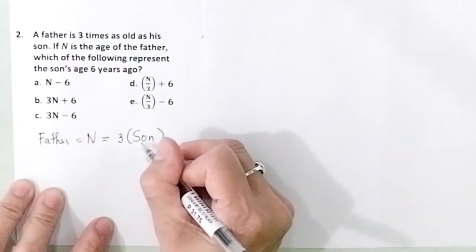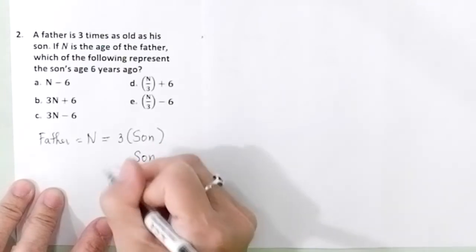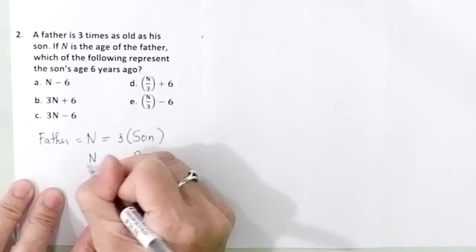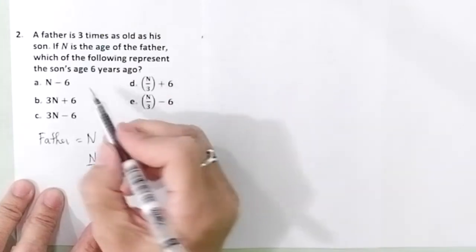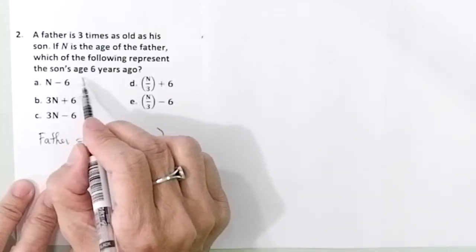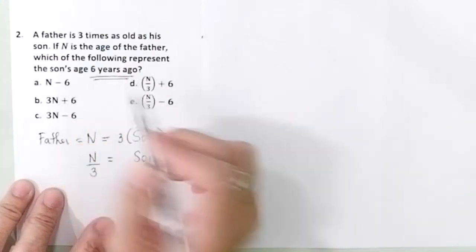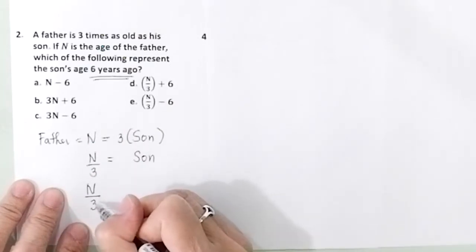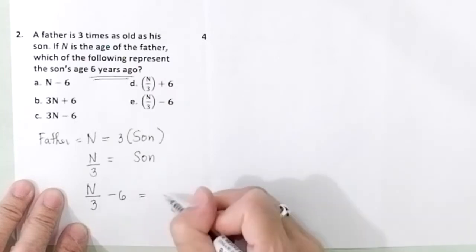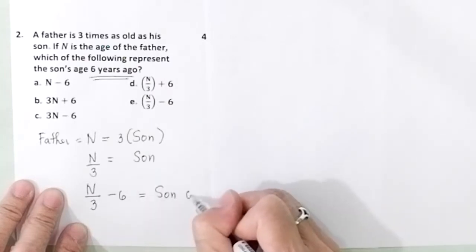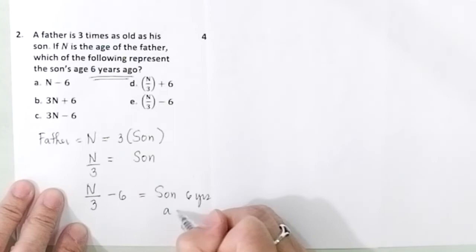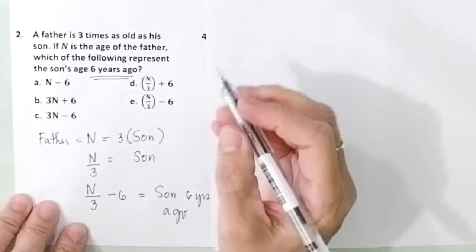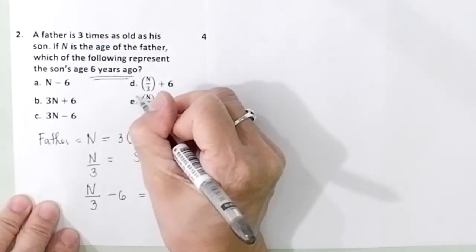If you want to get the age of the son, then the son will just be N over 3. But there is a phrase here, 6 years ago. So therefore, you get the age of the son now minus 6 will be the age of the son 6 years ago. The final answer here is letter E.